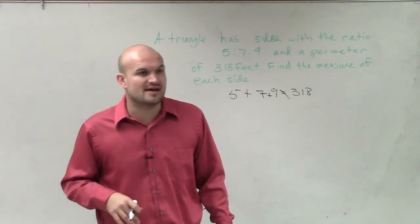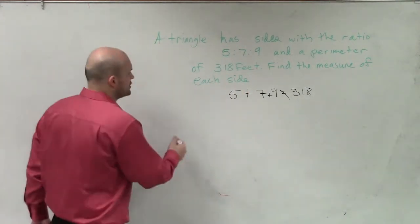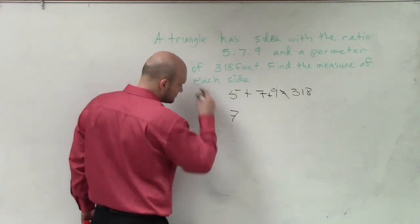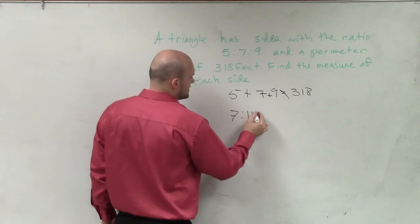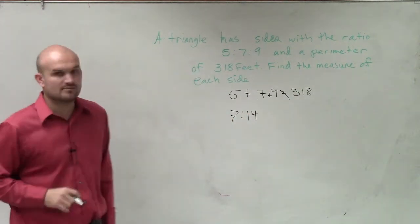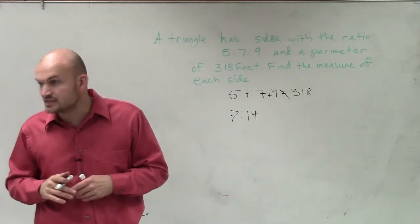For instance, we had our ratio from boys to girls in this class. Let's say it was 7 to 14: 7 girls to 14 boys. That means there's 21 students in this classroom, right?